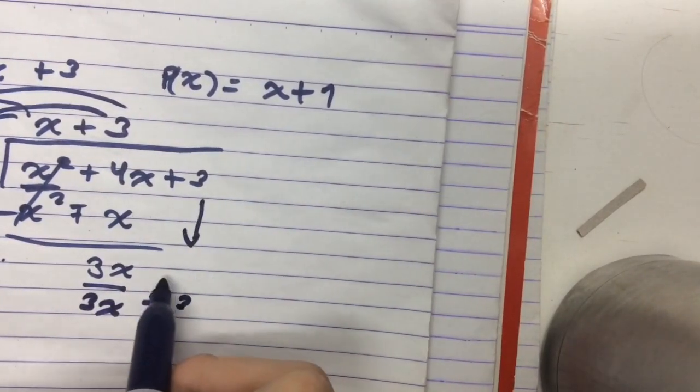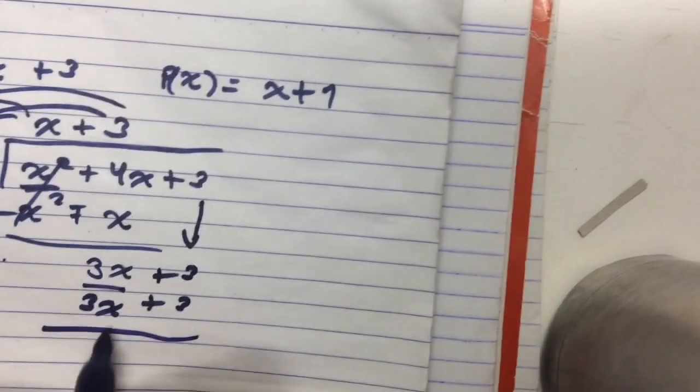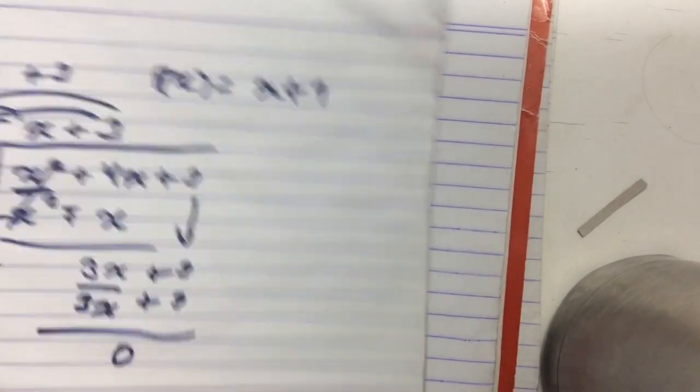And now, like normal division, we bring this down. And so this would become 3x plus 3. And we have zero as a remainder.